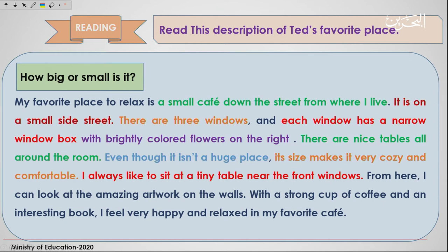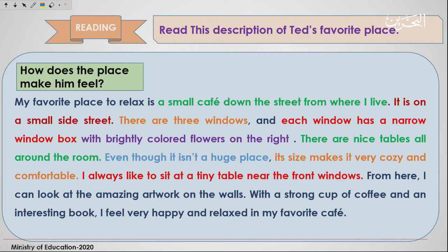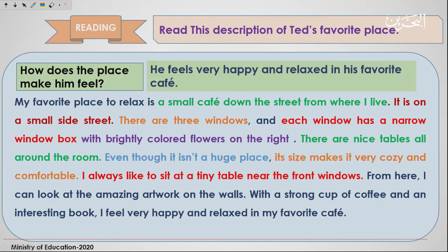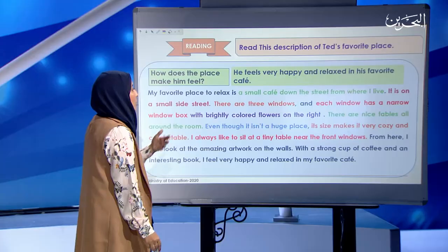How big or small is it? It is a small cafe — it isn't a huge place. How does the place make him feel? We're talking about feelings — adjectives describing feelings. He feels very happy and relaxed in his favorite cafe. So when you're writing a descriptive paragraph or recommending a place to a friend, this is how we usually do it — answering three to four questions focusing on adjectives and prepositions.